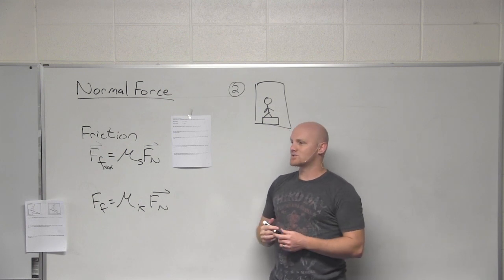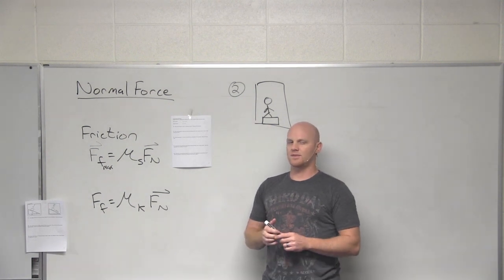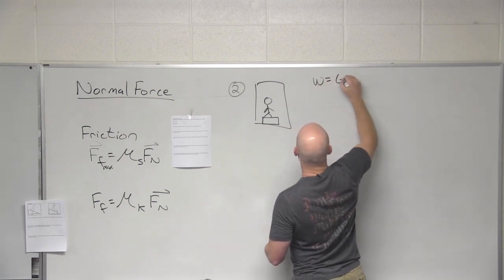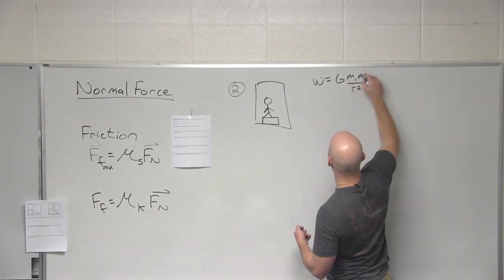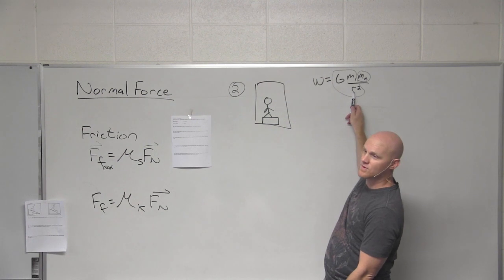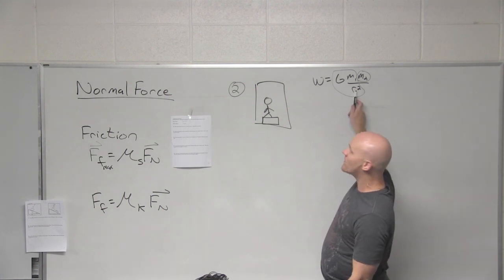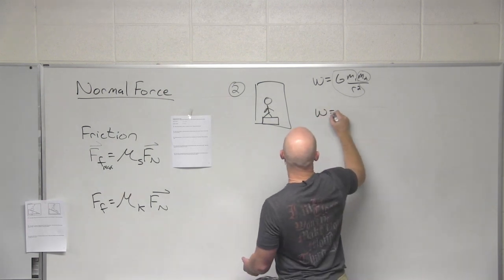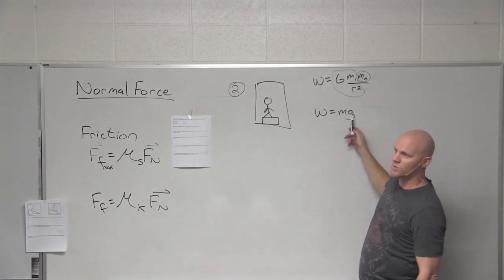We should know something about gravity here. When we talk about an object's weight, we're talking about the force due to gravity. We can simplify this at the surface of the Earth. Instead of saying this lady's weight equals G·m1·m2 over r squared, we simplify it. If you're on the surface of the Earth — or close to it — G, the mass of the Earth, and the radius of the Earth are all constants, so weight equals mg, where g equals 9.8 meters per second squared.